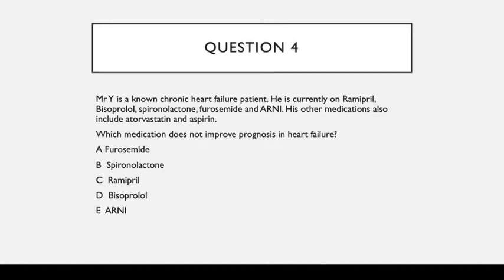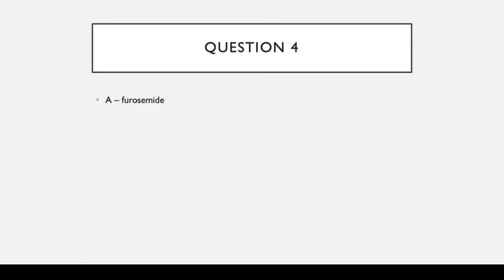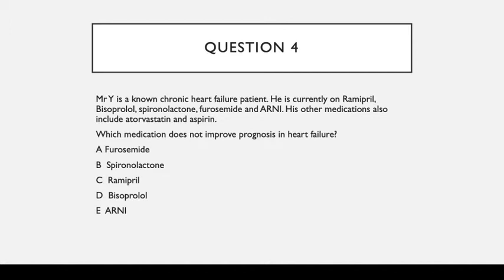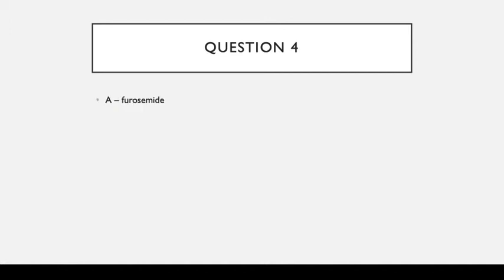Question 4: Mr Y is a known chronic heart failure patient on ramipril, bisoprolol, spironolactone, furosemide, and ARNI, plus atorvastatin and aspirin. Which medication does not improve prognosis in heart failure? The answer is A, furosemide — the loop diuretic. All the other medications improve prognosis, but the loop diuretic only improves symptoms.